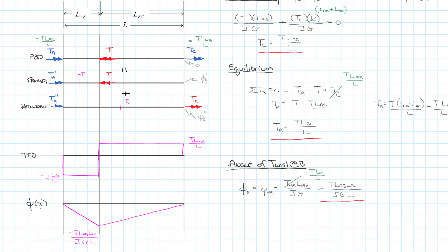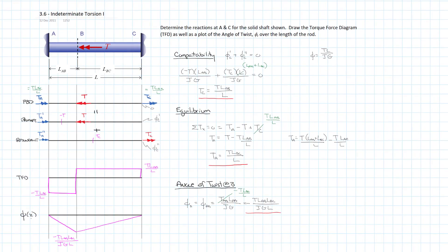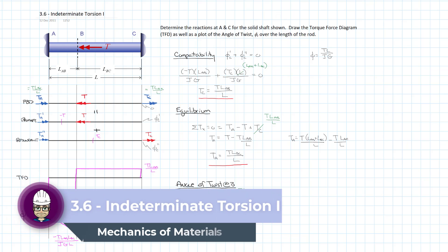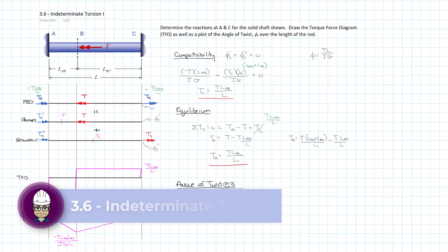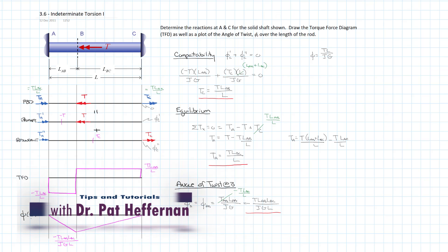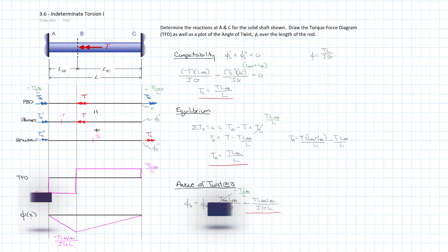The method of superposition — applying compatible displacements to derive a compatibility equation and combining it with one equation of static equilibrium — was all we needed to solve this problem. It is identical to the method used for axially loaded indeterminate problems. We'll do one more example, this time with different materials in different parts of the rod and actual numbers, so stay tuned. I'll leave a link to the next video.